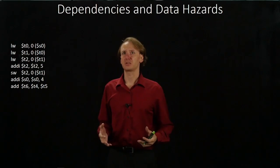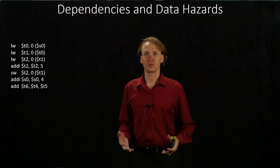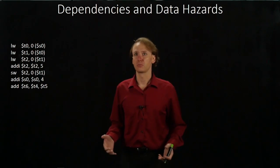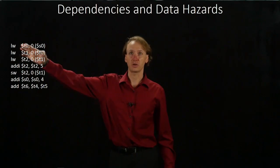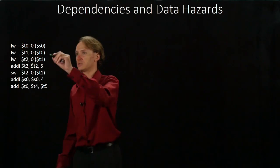The first thing I want to do is find all of the places where one instruction relies on the results of another one. For example, we have T0 here and T0 here. So there's an obvious dependency.